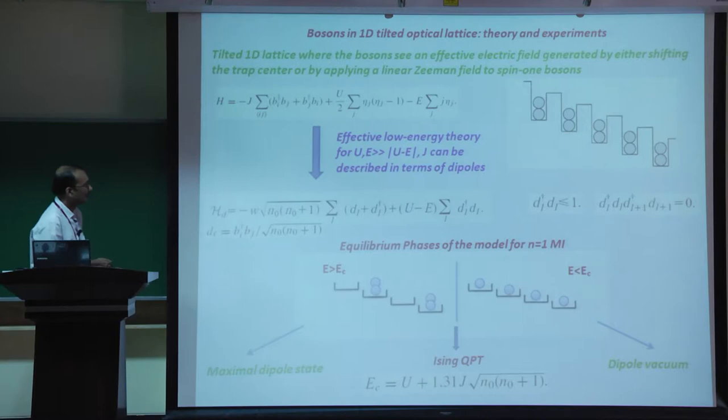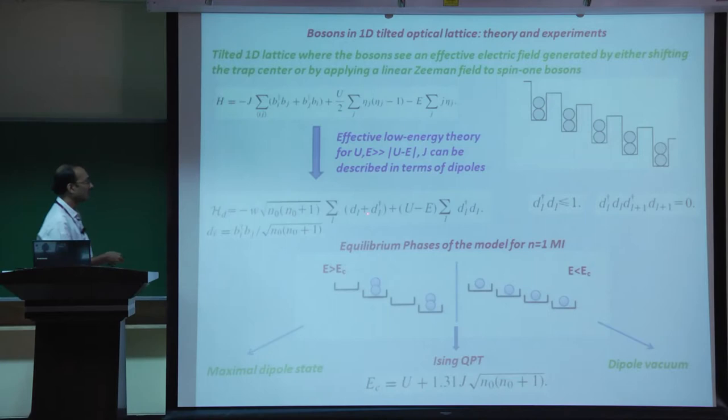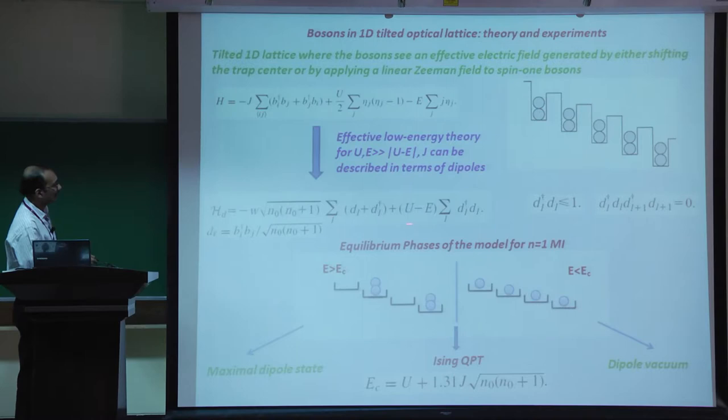Work done during my postdoc at Yale showed that this system of bosons can be described by an effective dipole model, where a dipole is a bound state of a boson and a hole at neighboring sites. The dipole Hamiltonian does not conserve dipole number because quantum fluctuations allow a boson to hop from one site to the next.